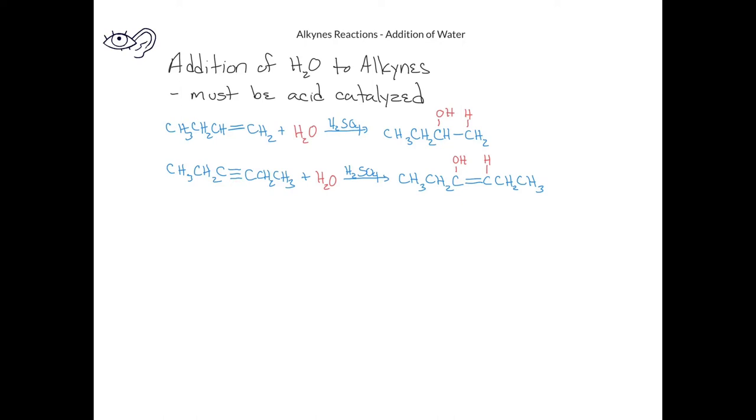The product we get is known as an enol because it has an alkene or carbon-carbon double bond functional group, and one of those sp2-hybrid carbons also has a hydroxyl group. So we get the enol of the name from the carbon-carbon double bond and the ol part of the name from the alcohol.